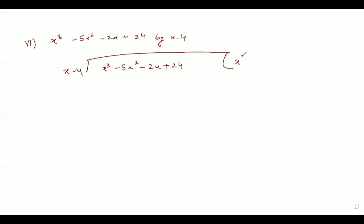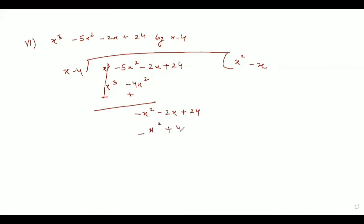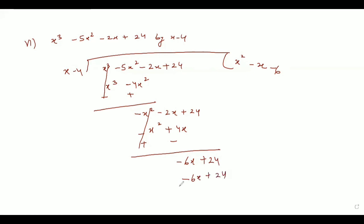The first term goes by x squared. We get x cubed minus 4x squared; we change the sign. It cancels, leaving minus x squared minus 2x plus 24. Now it goes by minus x only, giving minus x squared plus 4x. We change the sign again and it cancels, leaving minus 6x plus 24.